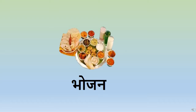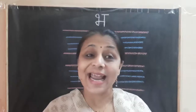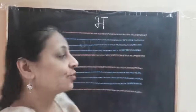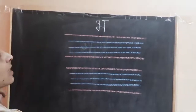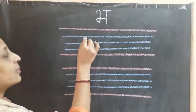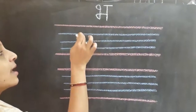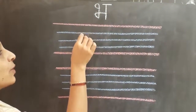So these are the words starting with Vyanjan Bha. I hope, children, you have repeated after me and you will learn all the words starting with Vyanjan Bha. Now let's see how to write letter Bha on the board. Can you see the three blue lines? We are going to write letter Bha in these three blue lines.